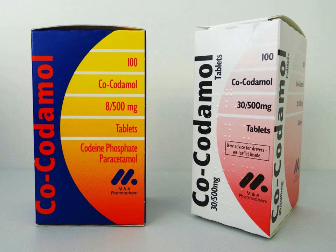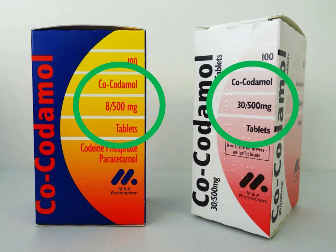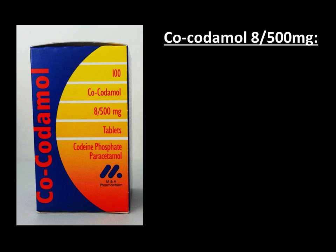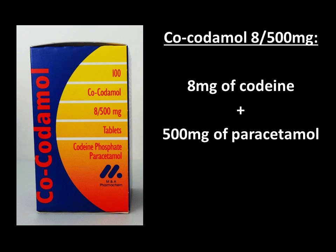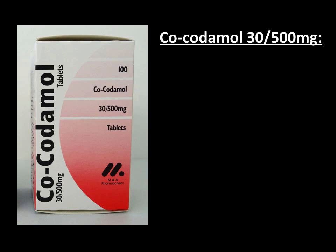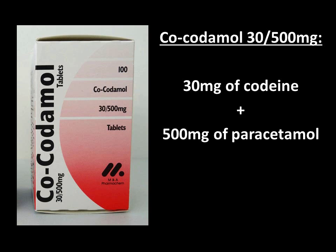Co-codamol is available in two different strengths: 8/500mg tablets and 30/500mg tablets. The 8/500mg tablets contain 8 milligrams of codeine and 500 milligrams of paracetamol per tablet. The 30/500mg tablets contain 30 milligrams of codeine in addition to 500 milligrams of paracetamol per tablet.